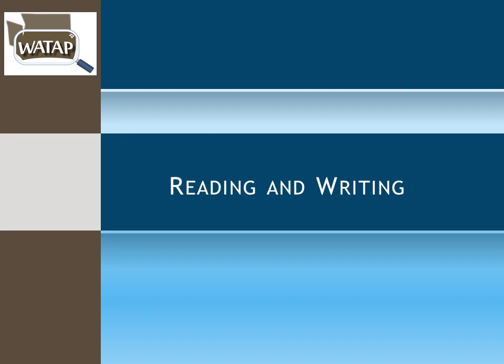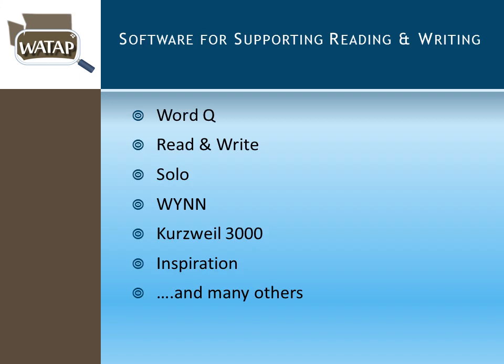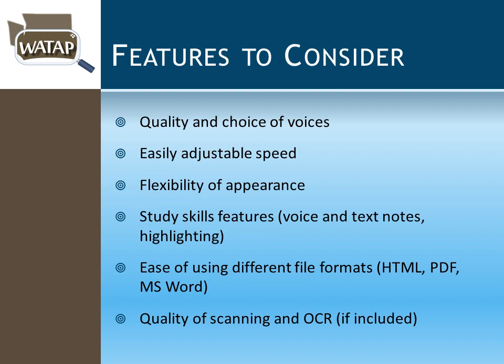Moving to reading and writing, software programs like WordQ, Read&Write, Solo, Wynn, Kurzweil 3000, and Inspiration are still available. Feature matching is important — not all students need every feature. Overwhelming them with too many features like those in Wynn or Kurzweil can be counterproductive. Choose a program with the features they actually need, such as OCR capability for scanning documents. Feature matching is significantly important.